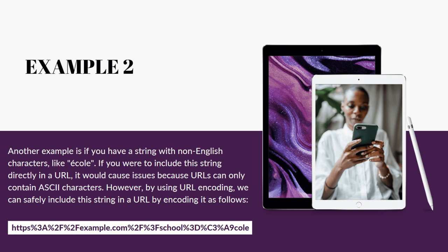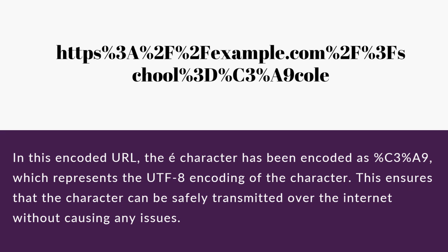The encoded URL would look like: HTTPS%3A%2F%2Fexample.com%2F%3Fsgol%3D%C3%A9Col. In this encoded URL, the accented character has been encoded as %C3%A9, which represents the UTF-8 encoding of the character. This ensures that the character can be safely transmitted over the internet without causing any issues.